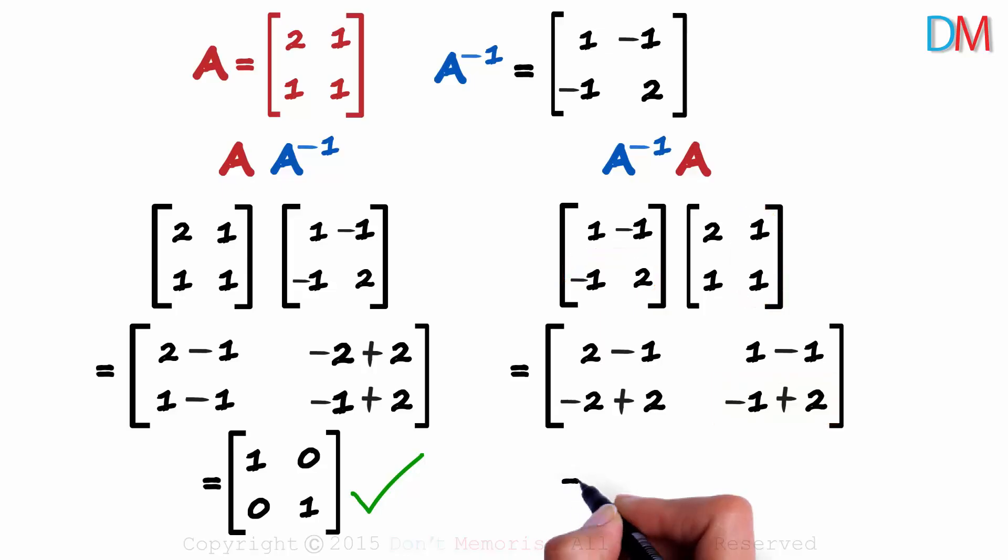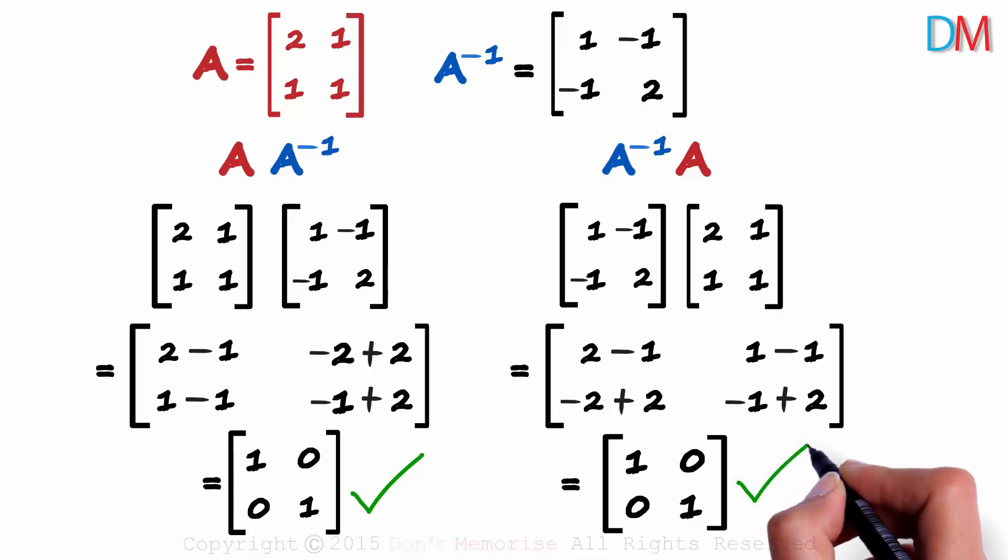What do we get after solving each? 2 minus 1 is 1. 1 minus 1 is 0. Minus 2 plus 2 is 0. And minus 1 plus 2 is 1. Clearly an identity matrix again.